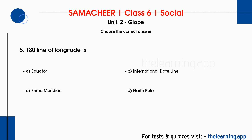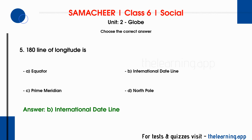Question 5: The 180 line of longitude is. Options are A. Equator, B. International Dateline, C. Prime Meridian, D. North Pole. Correct answer is B. International Dateline.